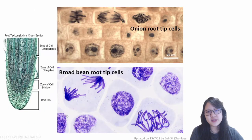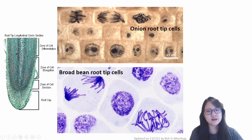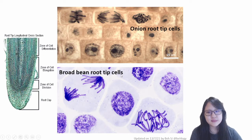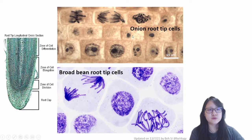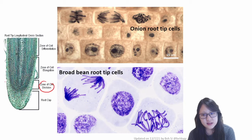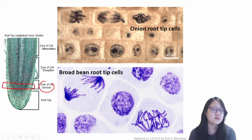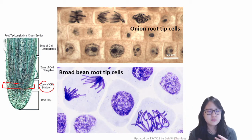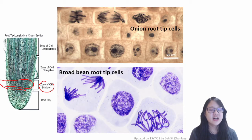As mentioned, you do need to be able to identify these cells under the microscope. This is onion root tip cells and these are broad bean root tip cells — you can look at them and try to identify each of the stages. Usually when it comes to root tip cells, we take slides from the zone of cell division, which is where the most active mitosis is found. Most slides shown in exam questions come from this zone.